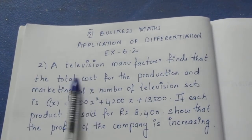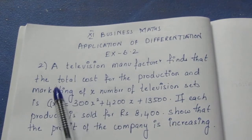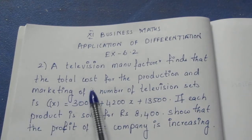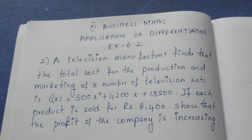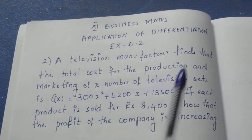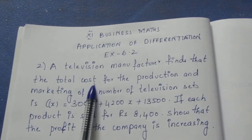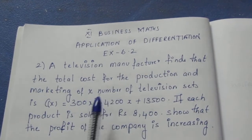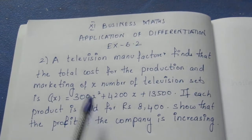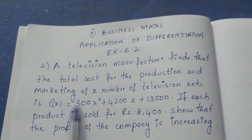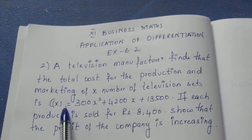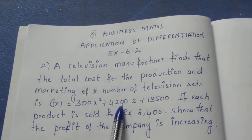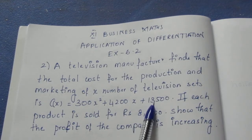Question: A television manufacturer finds that the total cost of the production and marketing of X number of television sets is given. The total cost, CP, is equal to 300x squared plus 4200x plus 13500.